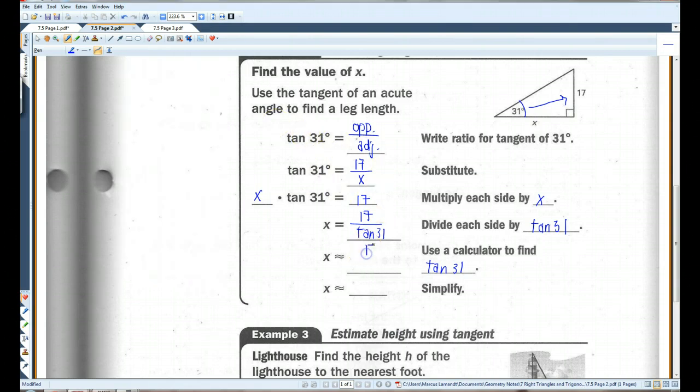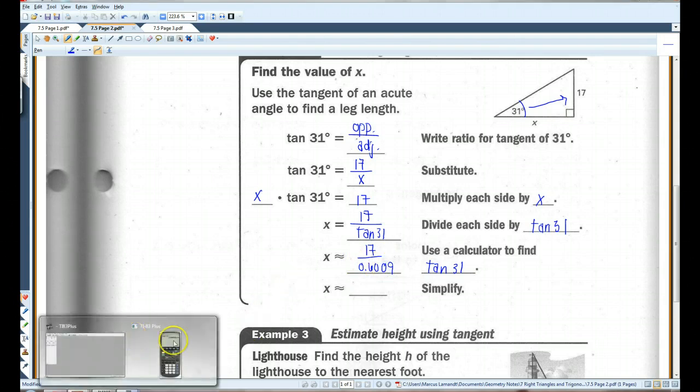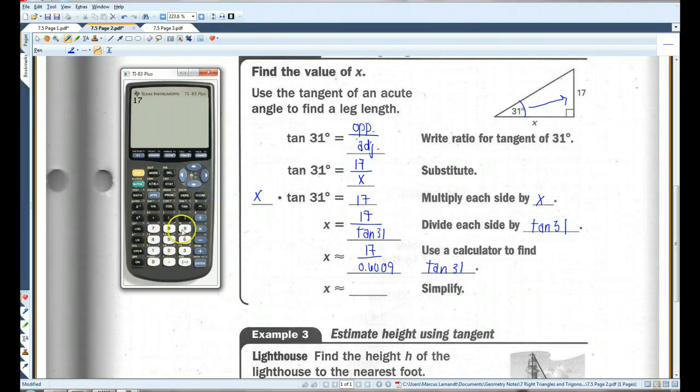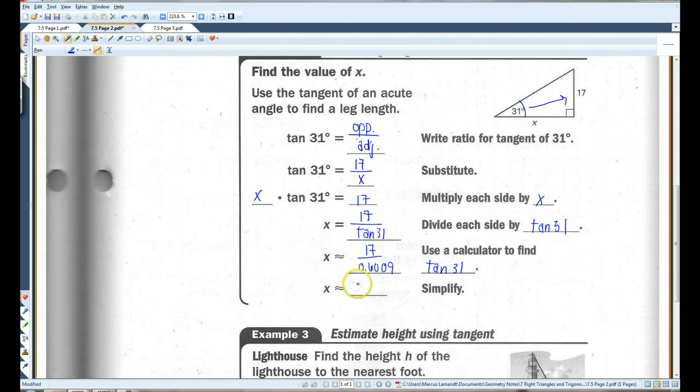So, I've got 17 over 0.6009. If I divide that. 17 divided by 0.6009. 28.3, I'll say. Alright.